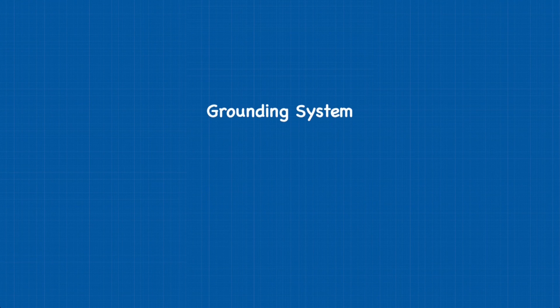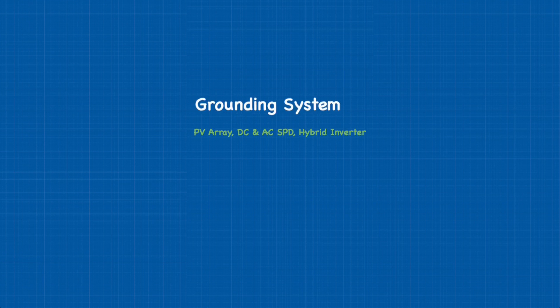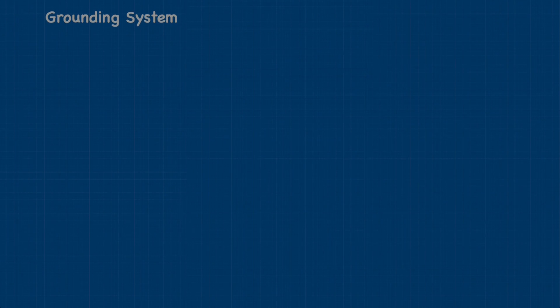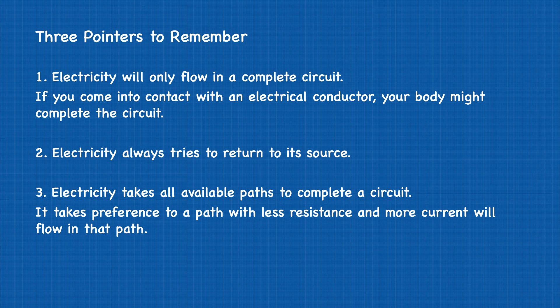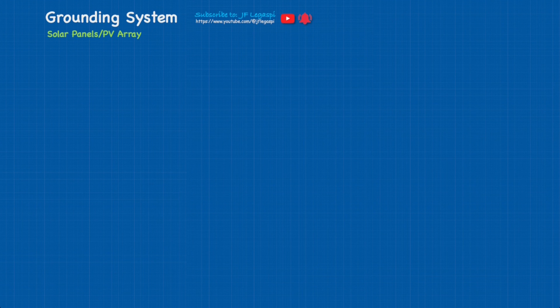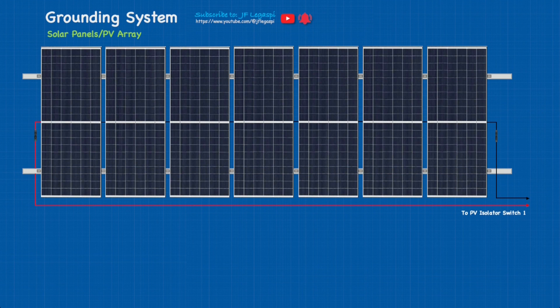And now we are on grounding systems. It's one of the most controversial parts when it comes to solar power system installations, and I have been receiving a lot of questions regarding this. Today I'm going to try my best to explain this in the most profound manner so everybody can understand. Let's start with PV array. Here's our solar panels.